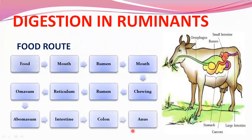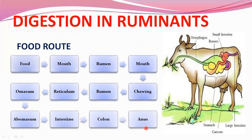Let's study digestion in ruminants and the food route — how food travels throughout the digestive tract. Food goes to the mouth, then mouth to rumen, rumen back to mouth for re-chewing, then back to rumen, rumen to reticulum, reticulum to omasum, omasum to abomasum, abomasum to the small intestine and large intestine, then colon and anus. This is how food travels throughout the alimentary canal in ruminants.